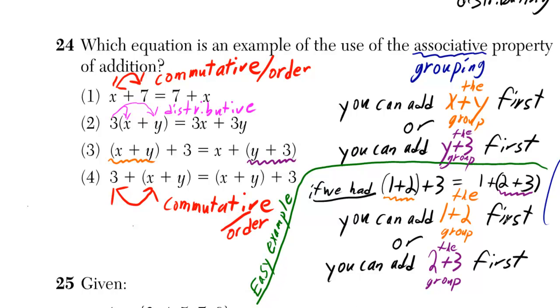Which equation is an example of the use of the associative property of addition? The associative property is sometimes called the grouping property because you are choosing what two things you're going to group to add first.